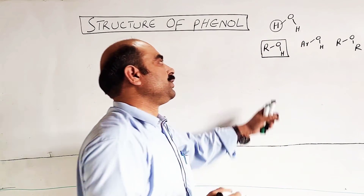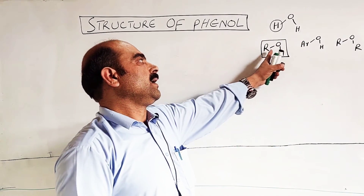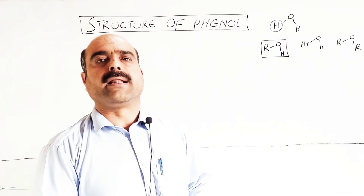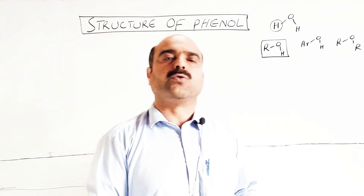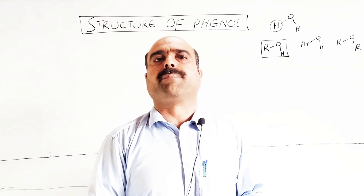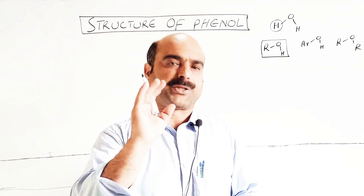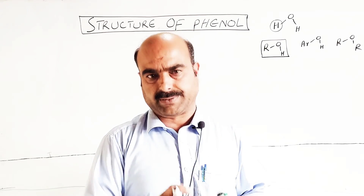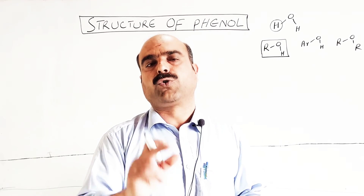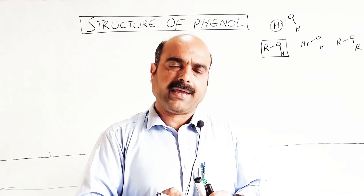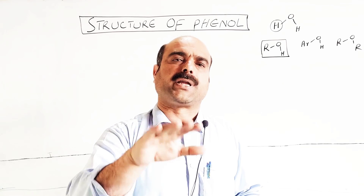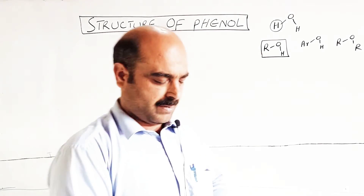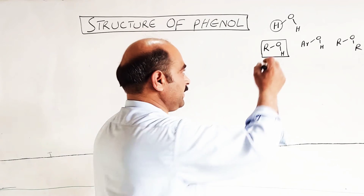Now we know that the bond angle of water is 104.5 degrees, which is very close to the true tetrahedral angle — 104.5 degrees or approximately 105 degrees.